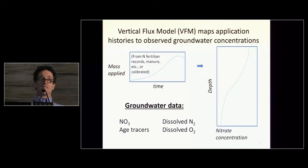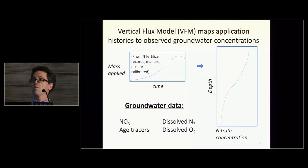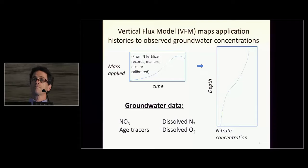The basic principle of this vertical flux model is essentially to map application histories to observed groundwater concentration profiles. On the top left here is an example of some mass application — nitrate in this case. Inputs can be estimated from fertilizer records or from manure inputs, or it can be calibrated. You have some concentrations over time, and the crux of this method is just to transpose that to a vertical profile of concentrations with depth, with some simple mathematics involved. An important aspect of this method is that it deals with data sets that include age tracers, so that we can relate the vertical profiles and depths to travel times, as well as nitrate.